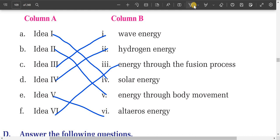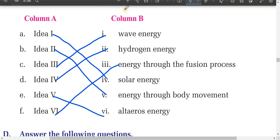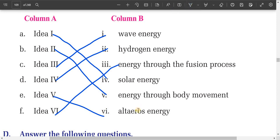Idea two is about energy through body movement. If you read the text, idea three is about wave energy. Idea four is about hydrogen energy. Idea five is about ultraviolet energy. And idea six, the last one, is about energy through the fusion process. Students can match these ideas accordingly in their exercise.